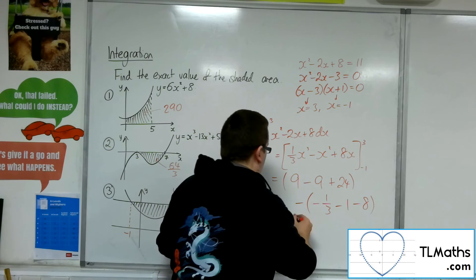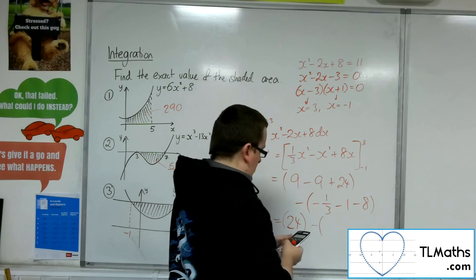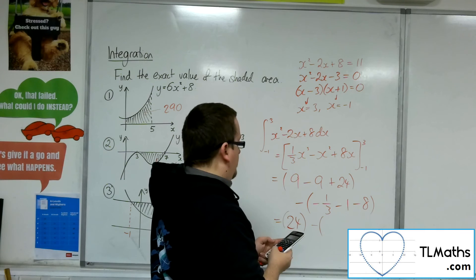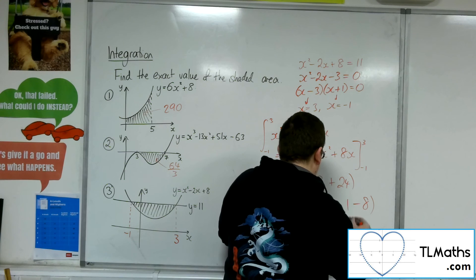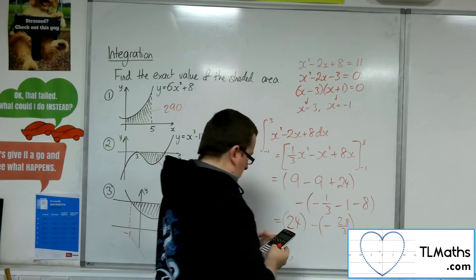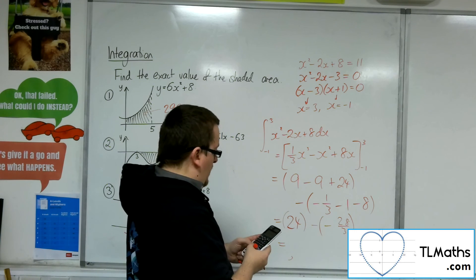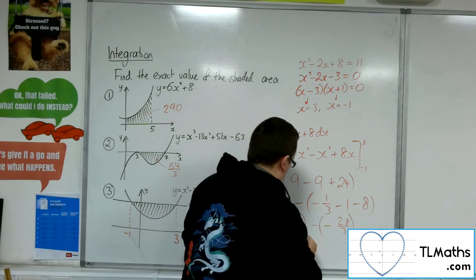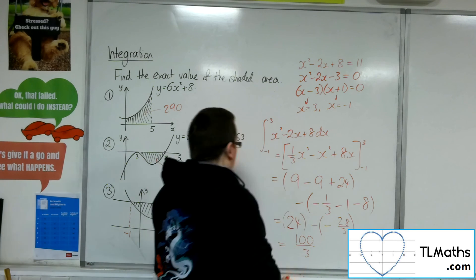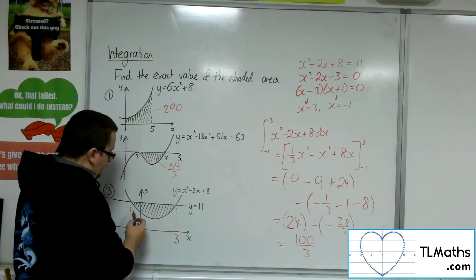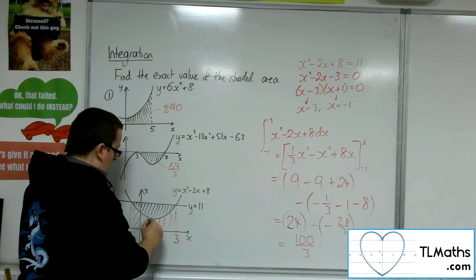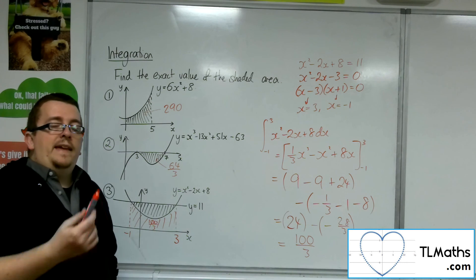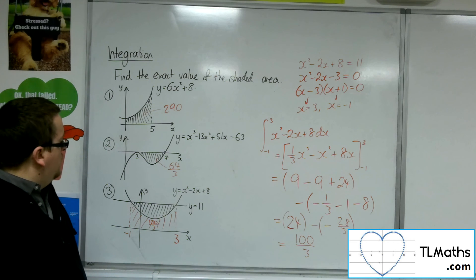So, we're going to have 24 in the first bracket, and then we've got minus 28 thirds in the second bracket. So, 24 plus 28 over 3 is 100 thirds. This region here is 100 over 3. The area between the curve and the x-axis is 100 over 3.